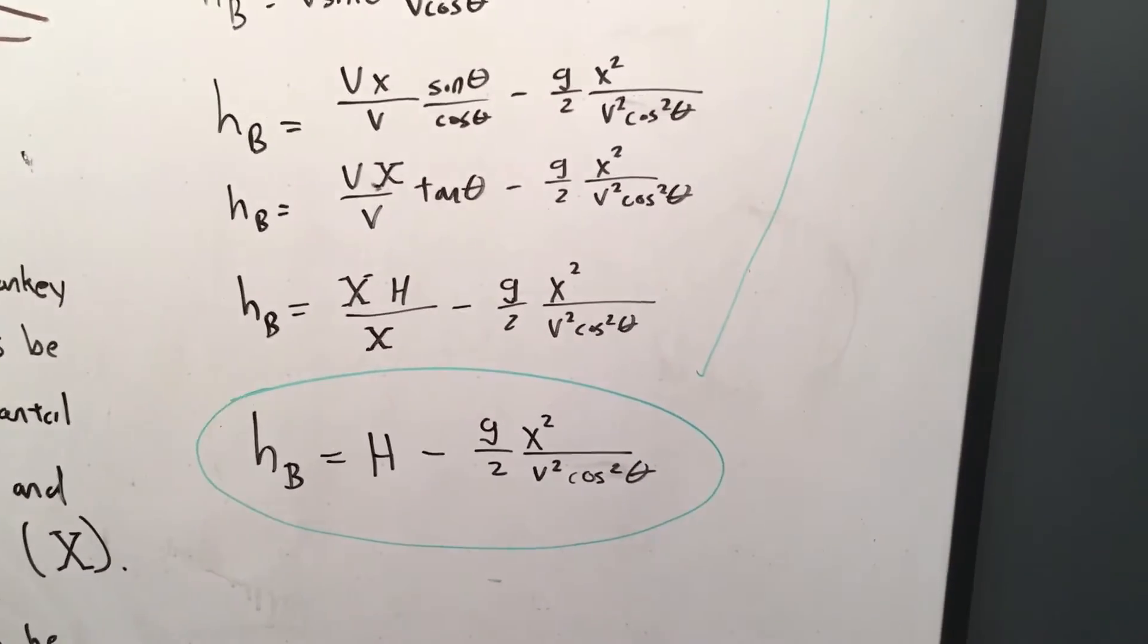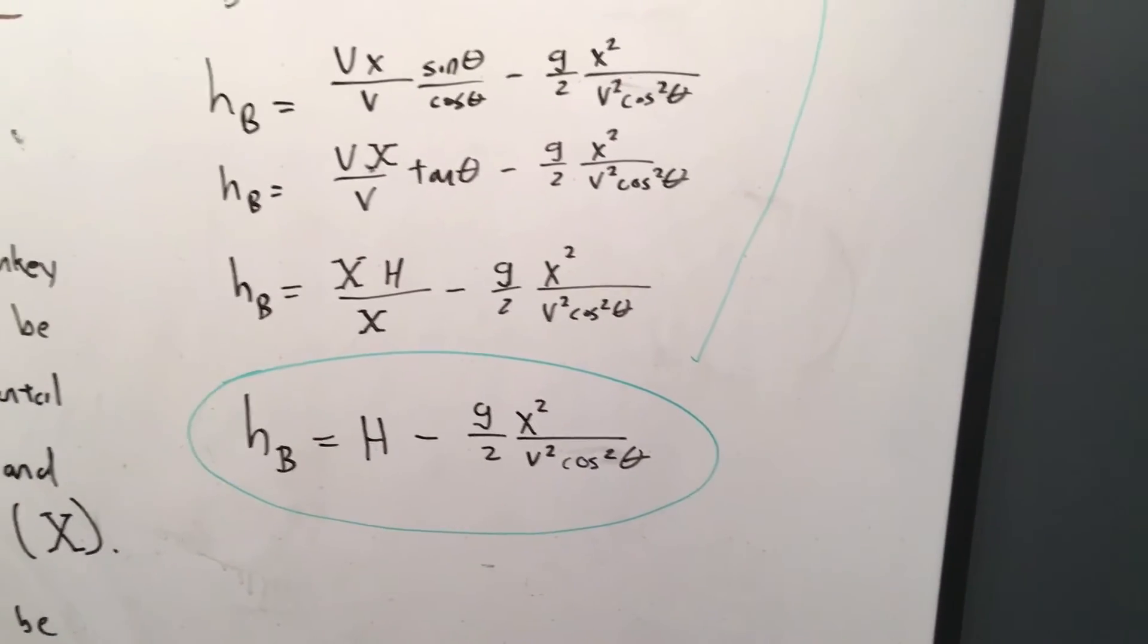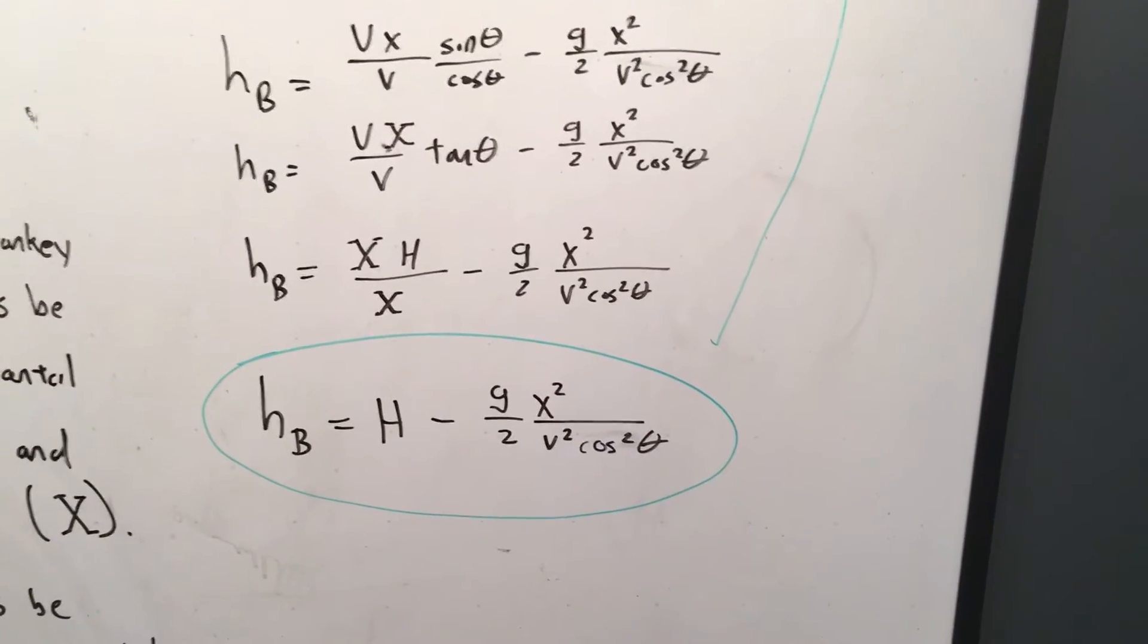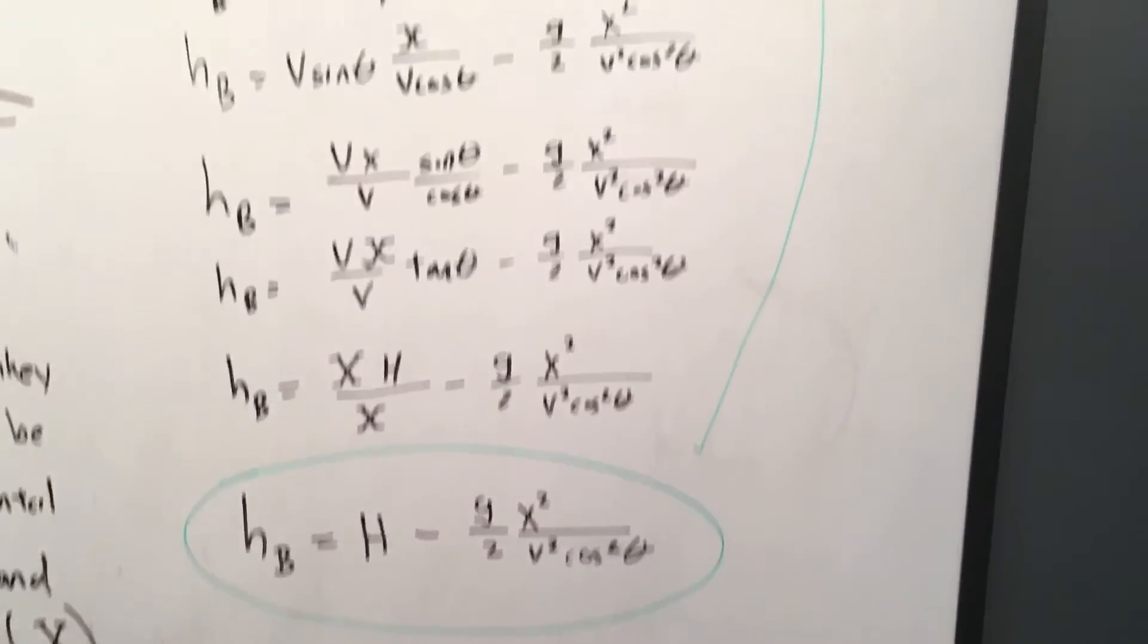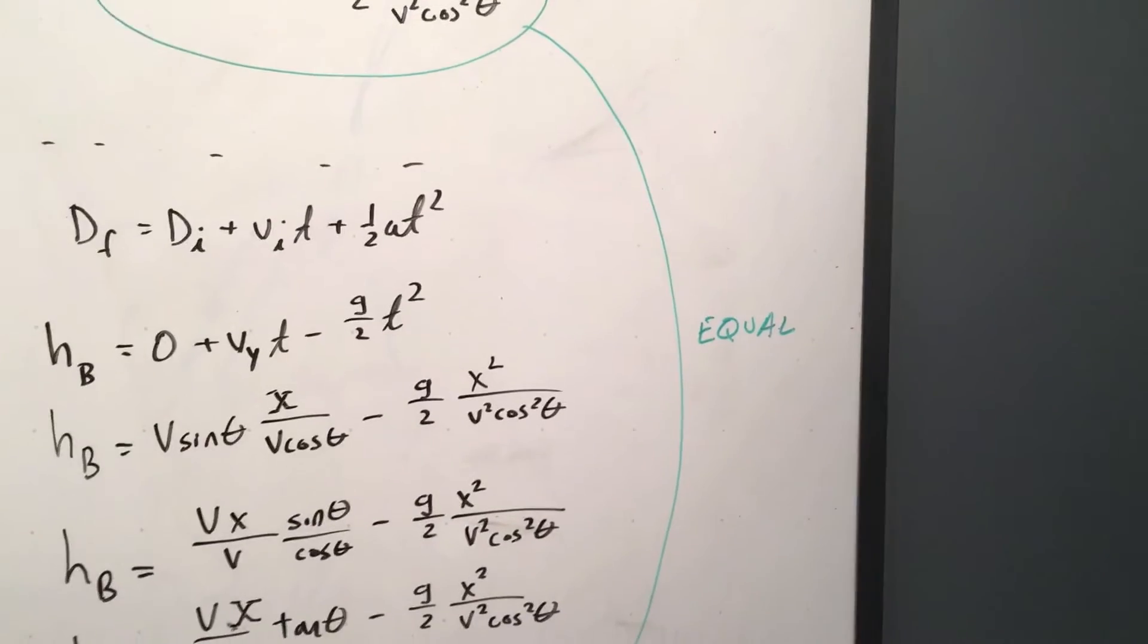Solve that further. Height of the bullet is H minus g over 2 X squared over V squared cosine squared theta. So the height of the bullet and the height of the monkey are equal.